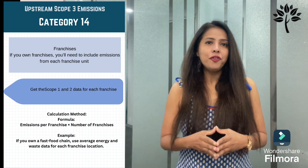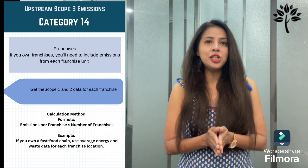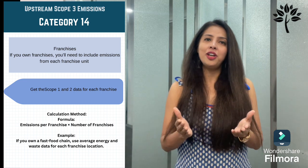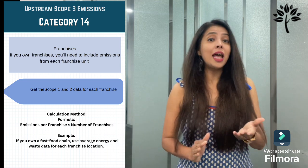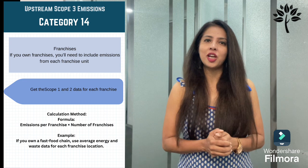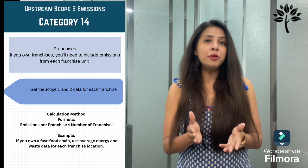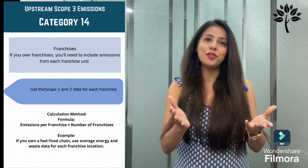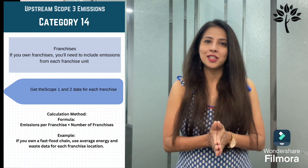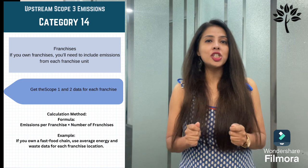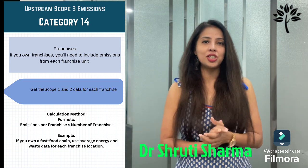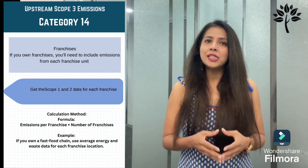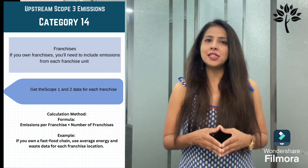Category 14 is franchises. If you own franchises, you need to include emissions from those locations using scope 1 and scope 2 data for each franchisee. The calculation method is: emissions per franchisee × number of franchises. Activity data is franchisee-level scope 1 and 2 emissions data. Emission factors are based on franchisee operations and energy use. For example, if you own a fast food chain, use average energy and waste data for each franchisee location.